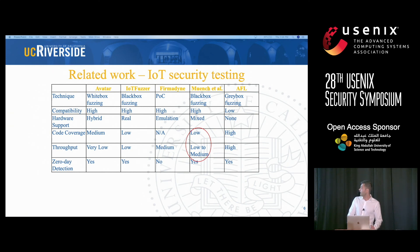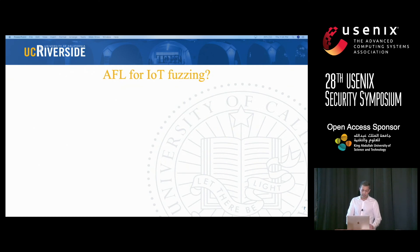And finally, we have AFL, which is a gray box fuzzer. It has very high coverage and high throughput. But the main problem with AFL is compatibility. The reason is that AFL is based on user mode emulation, and user mode emulation fails for IoT programs, because when there is a hardware dependency, user mode emulation cannot resolve it.